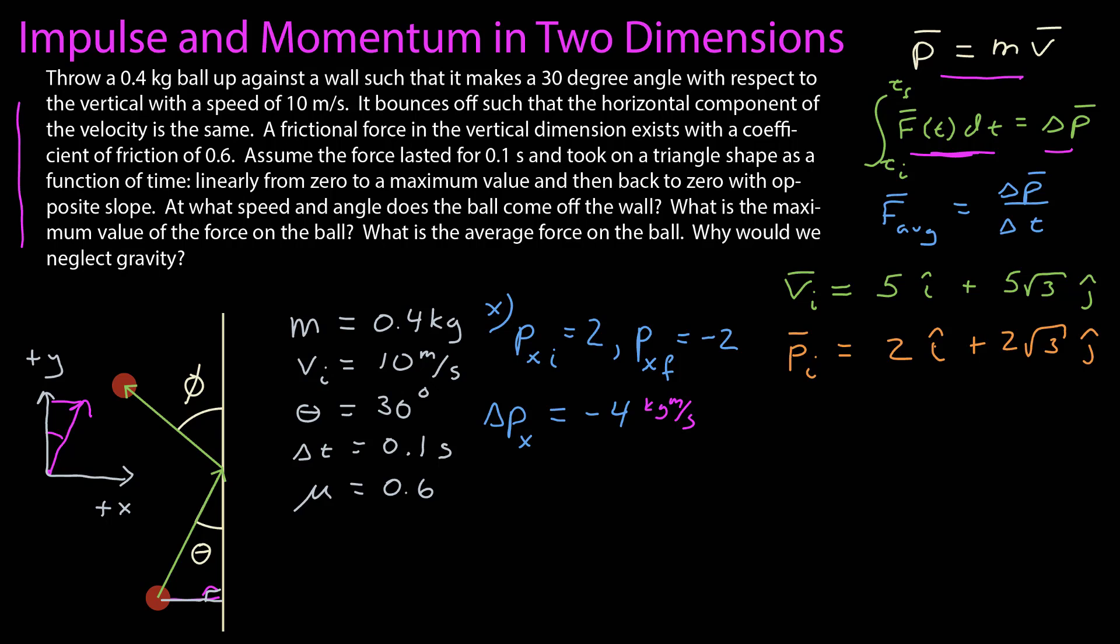Well, I know the x component of the impulse led to this change in the x component of the momentum, and that comes about from the x component of the force. So what do I know about that force? Well, if it's the x component, that means it's normal to the surface. So the x component is going to be the normal component of the contact force of the wall on the ball. And what do I know about it? Well, I know that it lasts for 0.1 seconds, but also that it has a triangle shape. It's linearly from 0 to a maximum value, and then it goes back to 0 with the opposite slope that it had before.